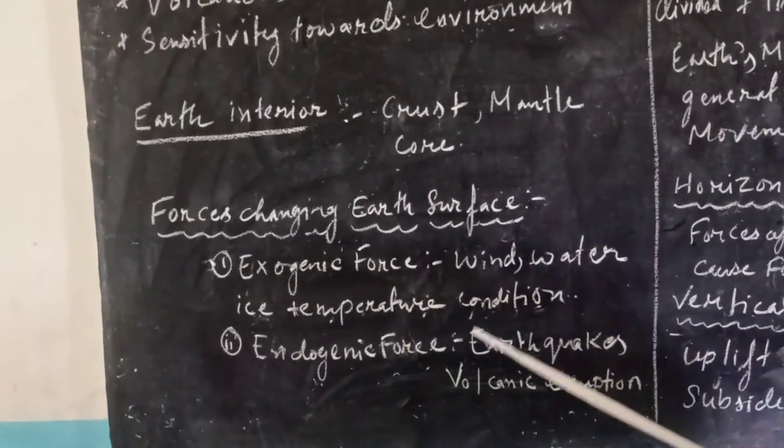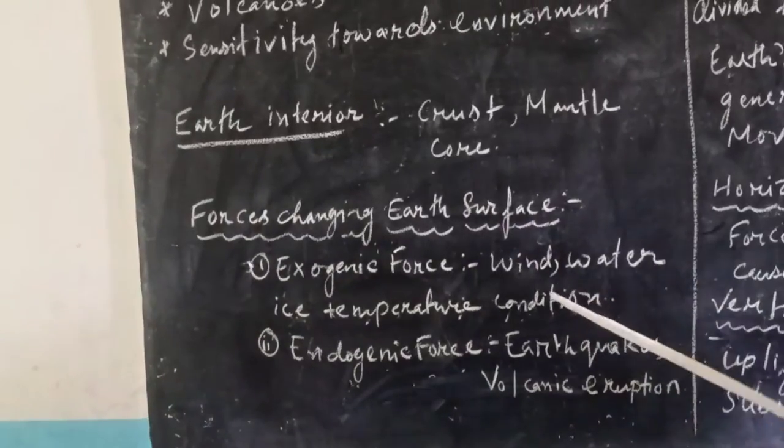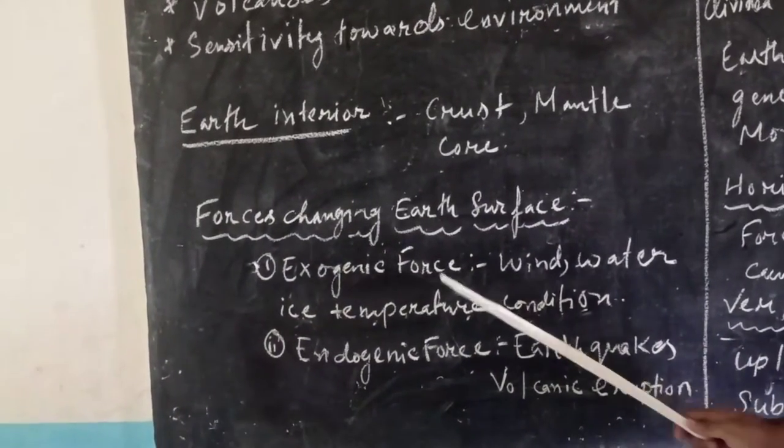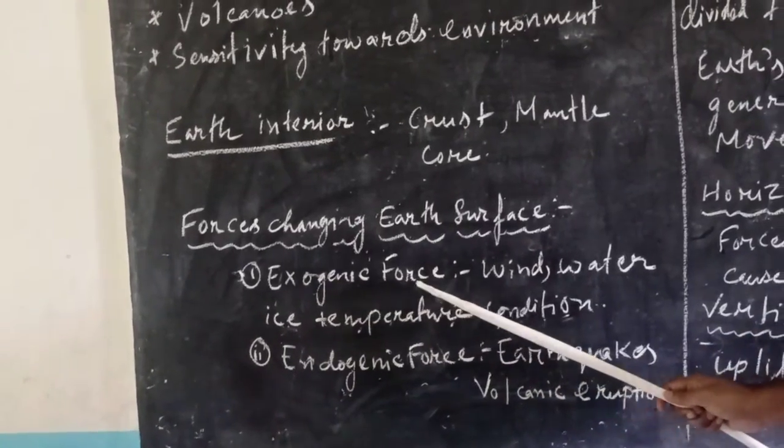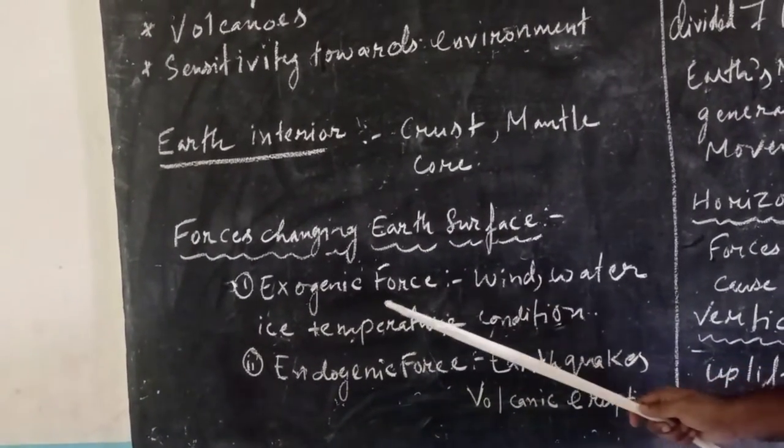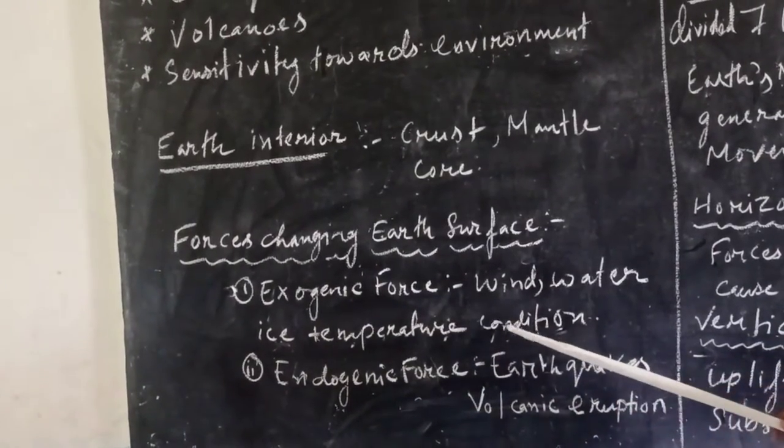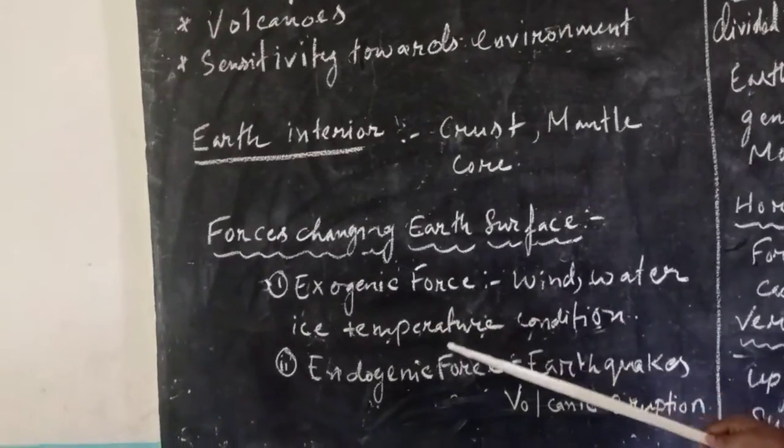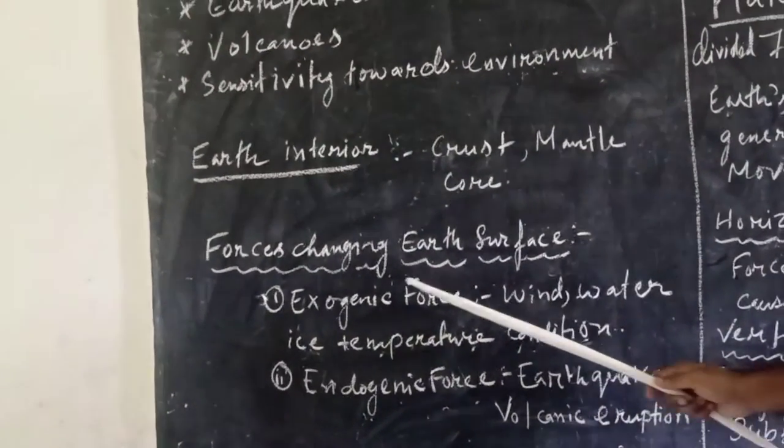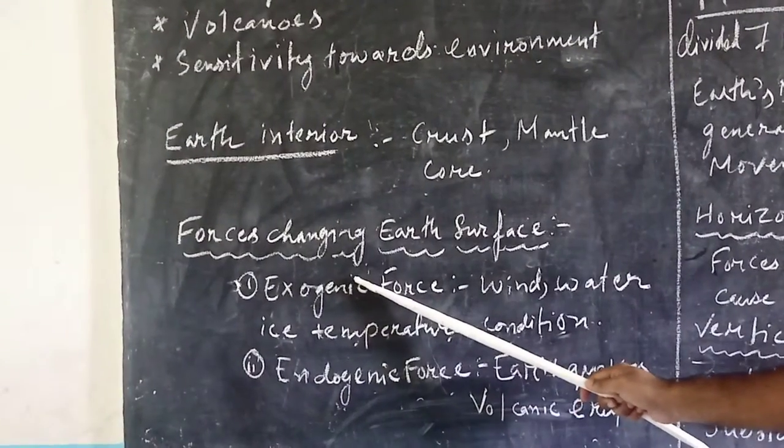Next, let us look at forces changing Earth's surface. Which are the forces changing Earth's surface? First one is exogenic force. Exogenic force changes Earth's surface visibly from outside. Some of the exogenic forces are wind, water, ice, temperature, and weathering. These are some of the exogenic forces which change the Earth's surface.